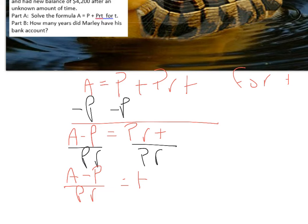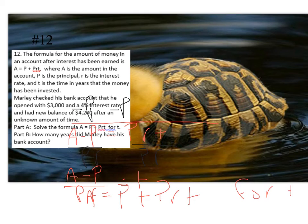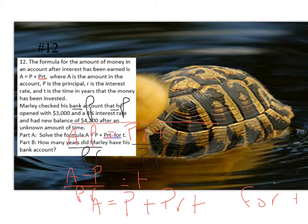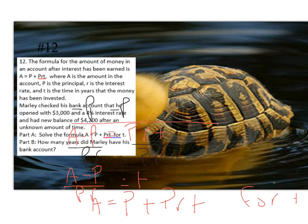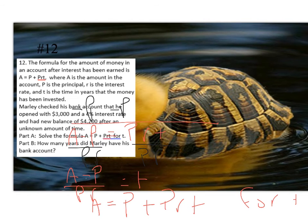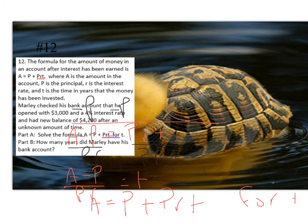So now part B. This is where we have to look and pay attention to the other stuff. A is the amount of the account, P is the principal, R is the interest, T is the time - that's information we need. They tell us he opened with $3,000. What he opens with is the principal - that's something you might want to remember on your study guide. Principal is the amount you open the account with: $3,000. Four percent interest rate - that's R. And a new balance of $4,200. That new balance is the amount in the account. And we want to solve for time.